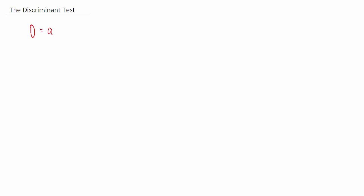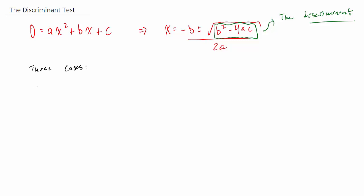All right, hello. In this video we are going to look at the discriminant test, which is sort of a smaller subset of the quadratic formula. Basically what it is, is that little piece underneath the square root is called the discriminant, b squared minus 4ac, and it gives us a lot of information about what kind of roots we're going to get.